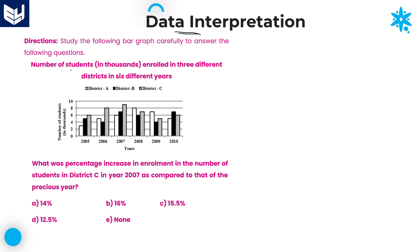First of all, we need to read the information carefully and then we need to solve the questions according to the given information. Whatever information is provided in the bar graph, we need to understand that information. After that, we need to solve the questions according to the information.